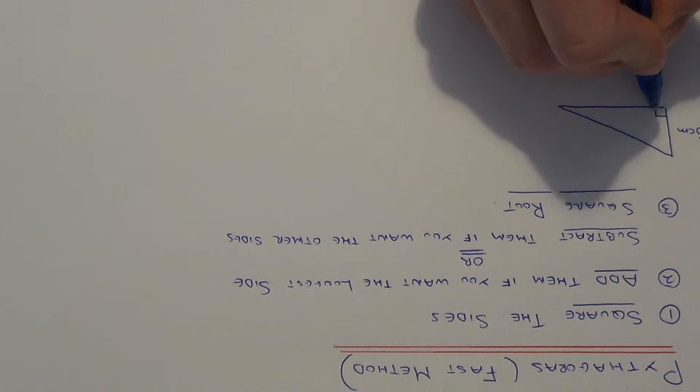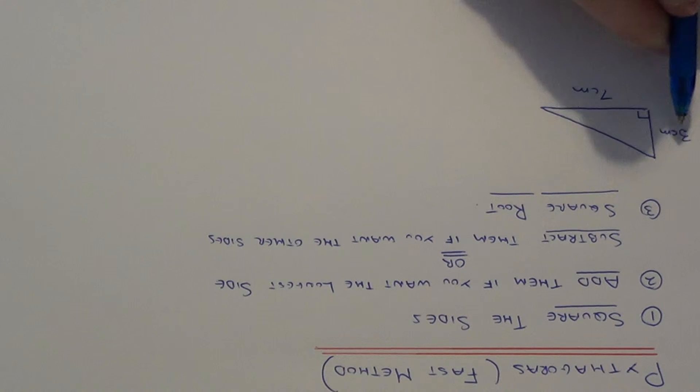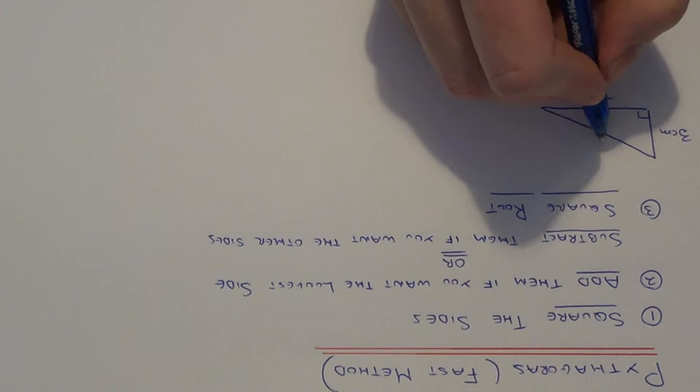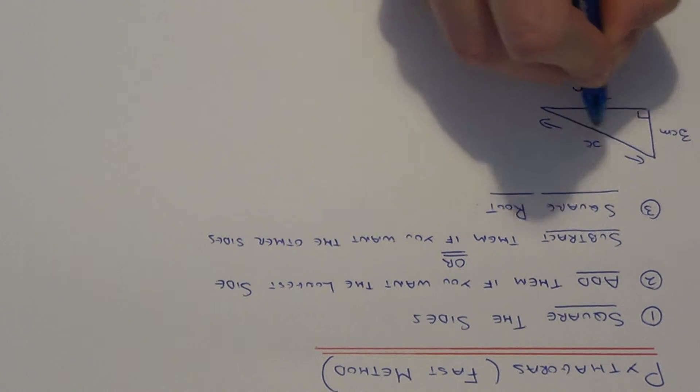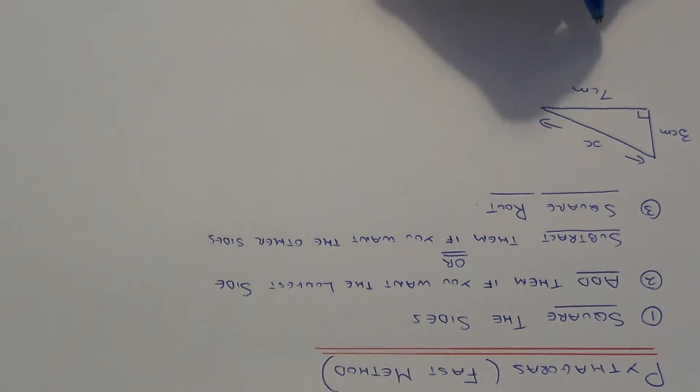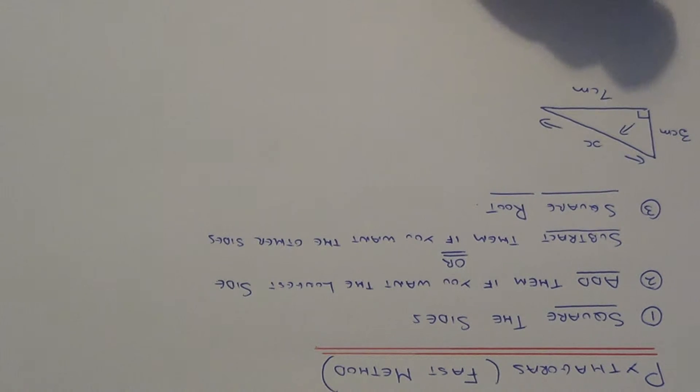So we have two sides. One side is three, one side is seven. And we need to work out the length of the longest side. The longest side is always opposite the right angle if you are unsure which one you are finding.